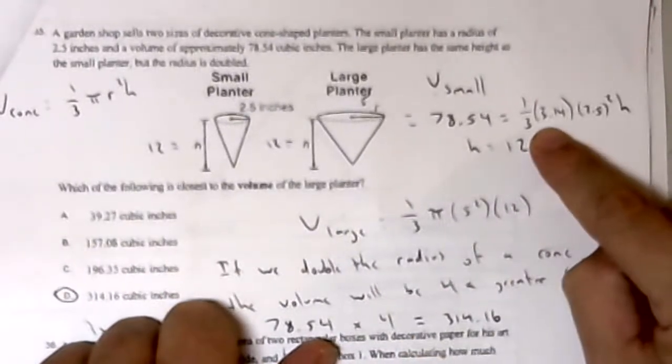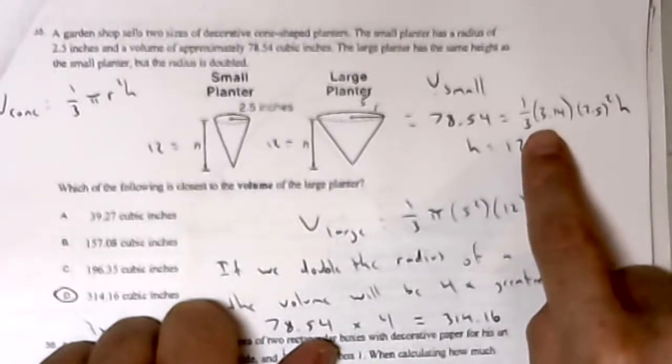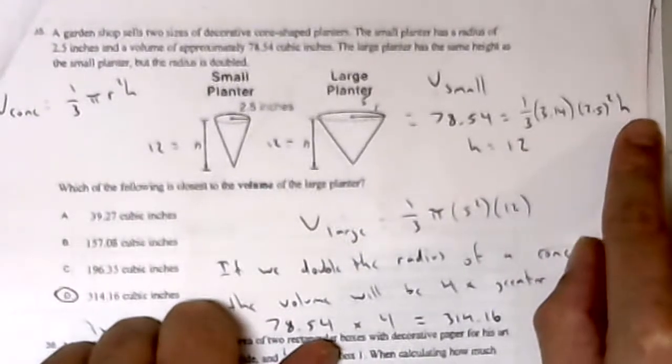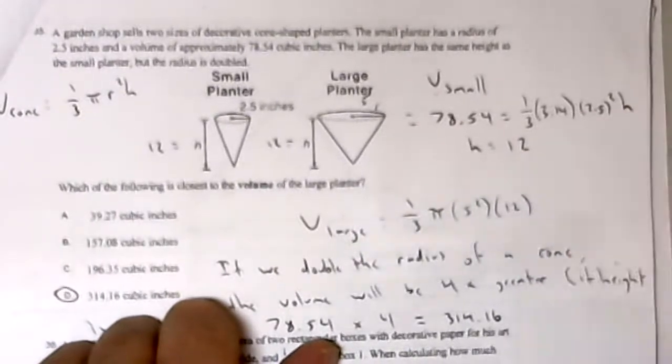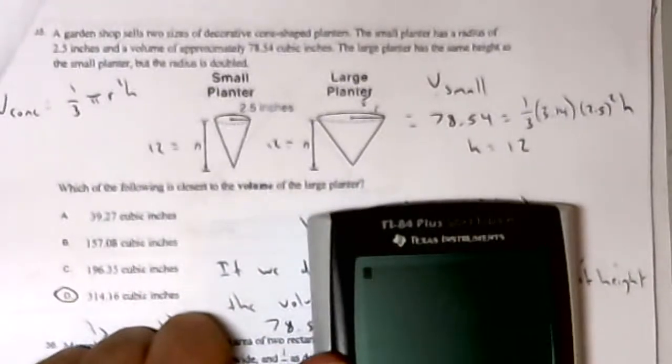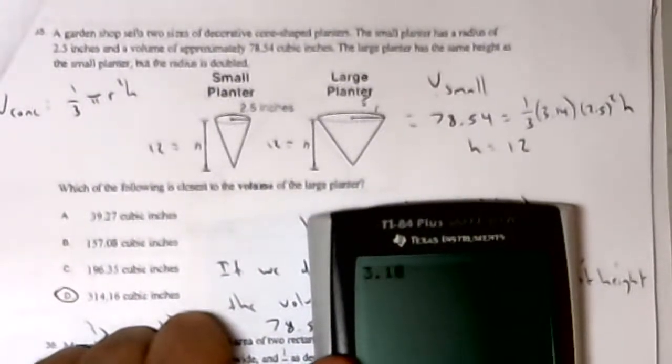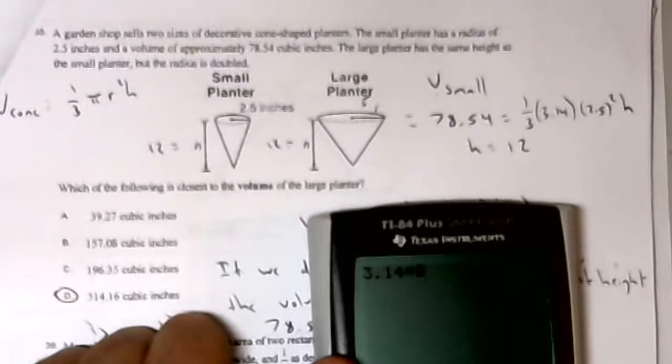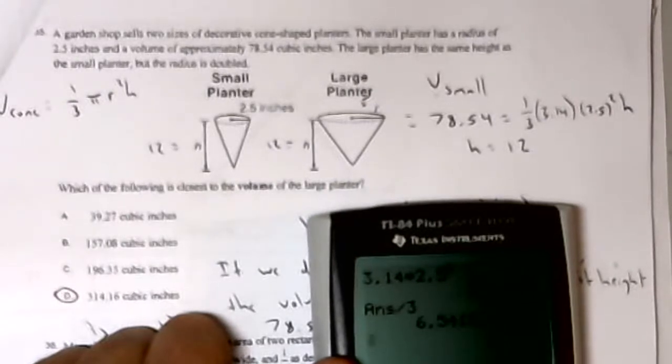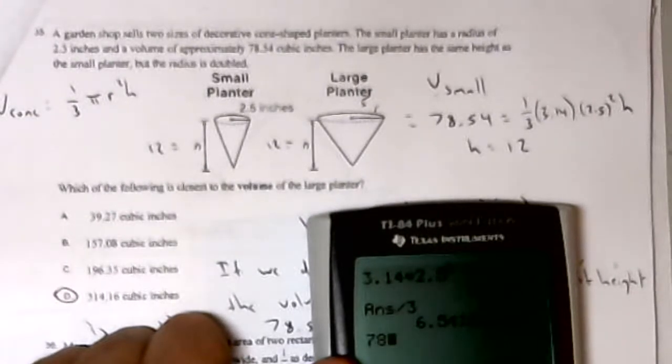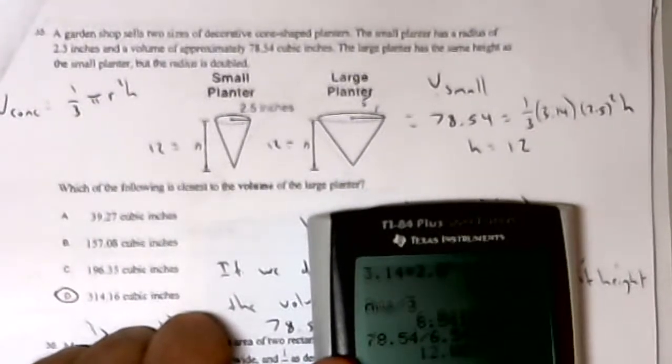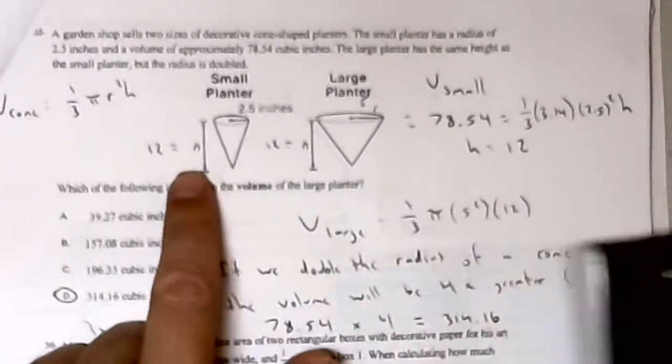So I'm going to multiply this out: 3.14 times 2.5 squared divided by 3, so 6.5416 repeating. 78.54 divided by that, 6.5416 repeating, gives me a height of 12.